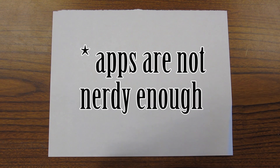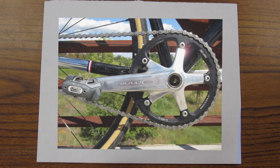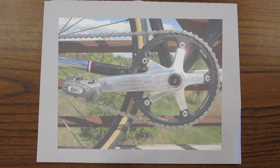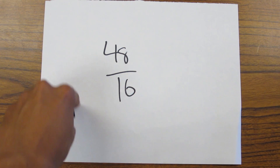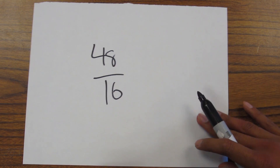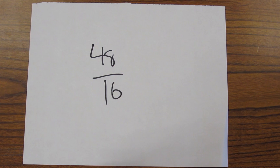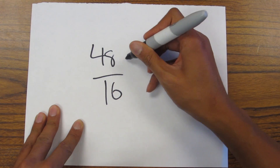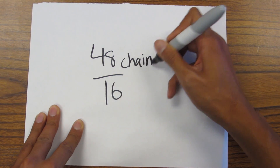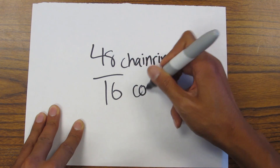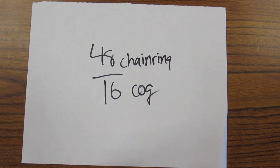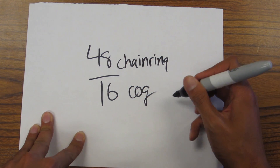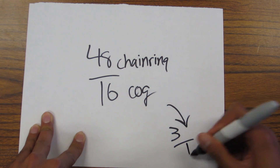Here's how to calculate the number of skid patches you have. Step number one: know your gear ratio. A very common gear ratio for track bikes is 48/16. What you want to do is take the number of teeth on your chain ring and put it over the number of teeth on your rear cog. Then simplify this fraction all the way down until you can't simplify it any more. So you get three over one.